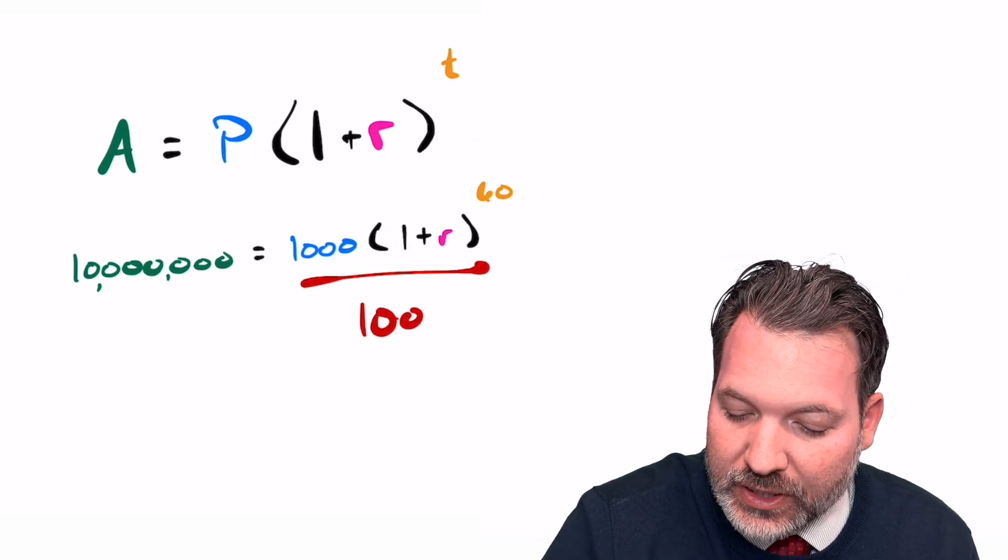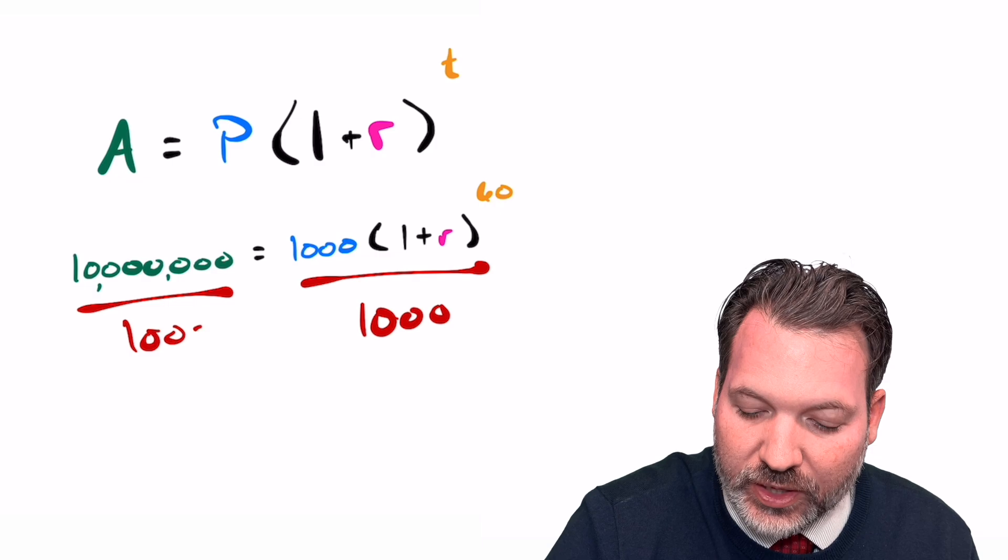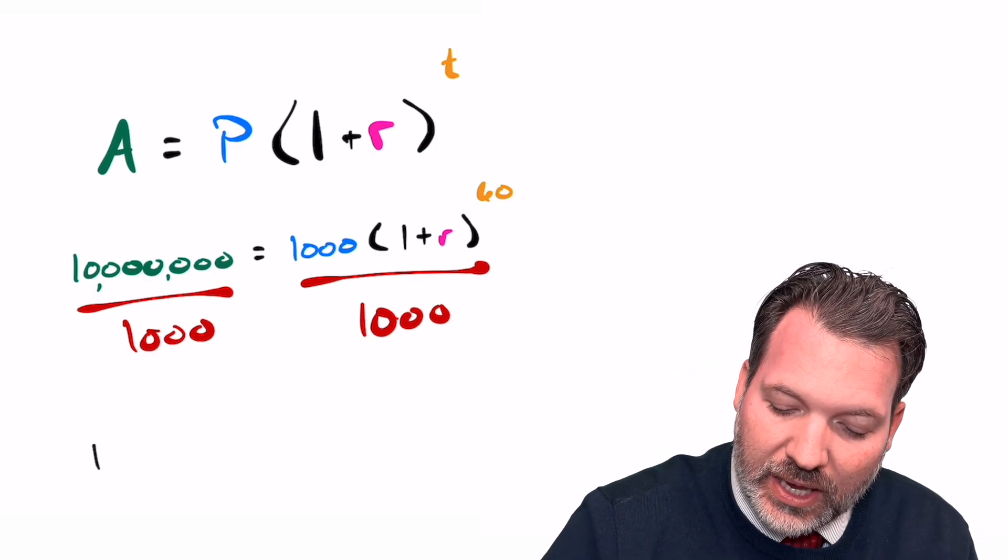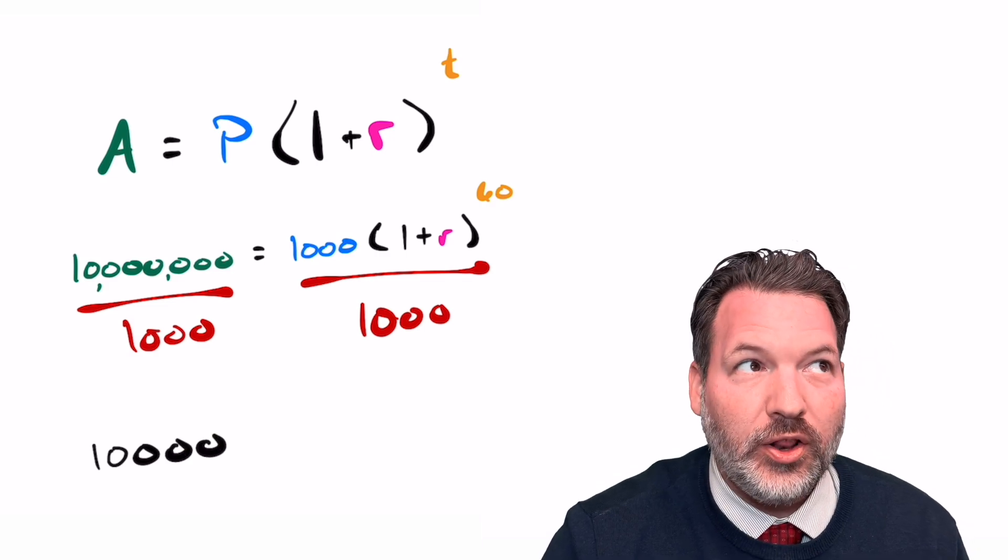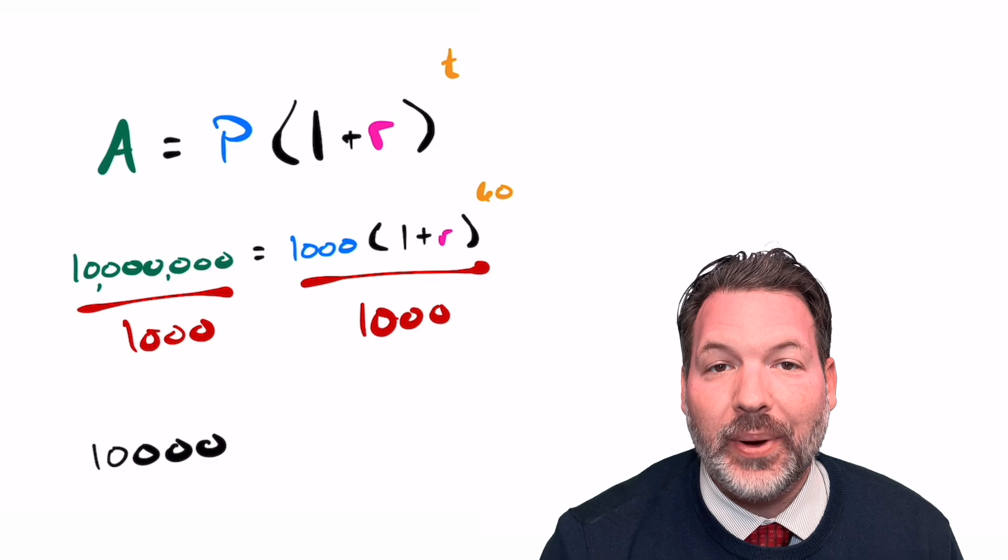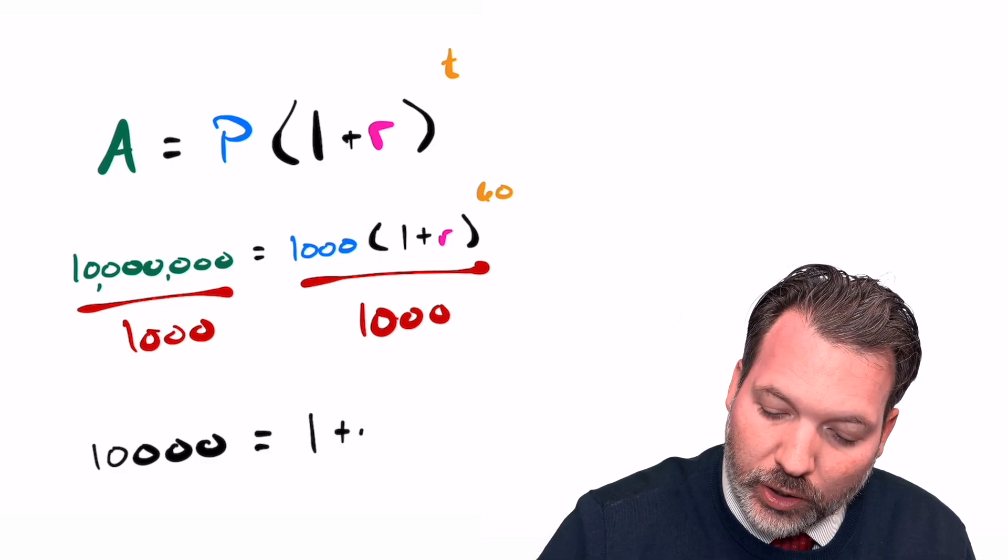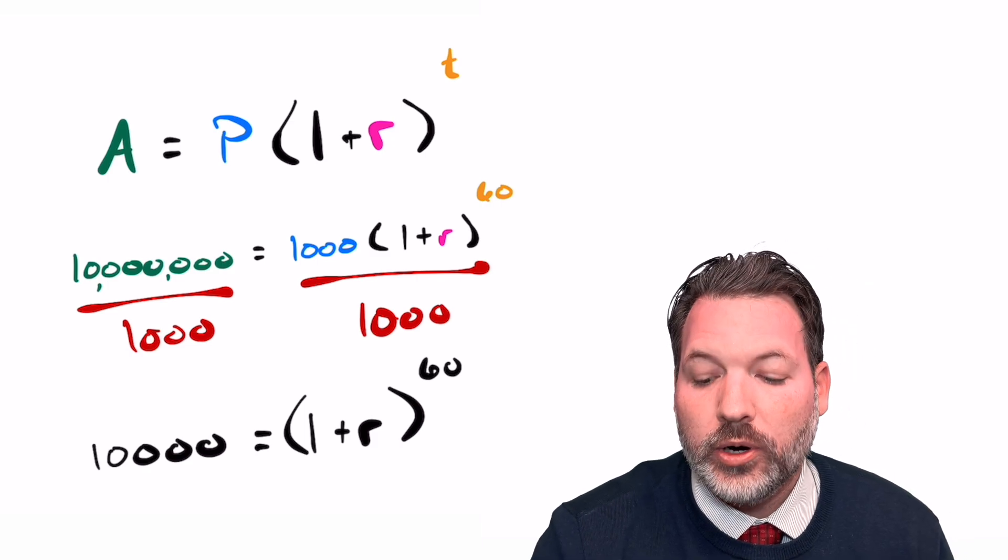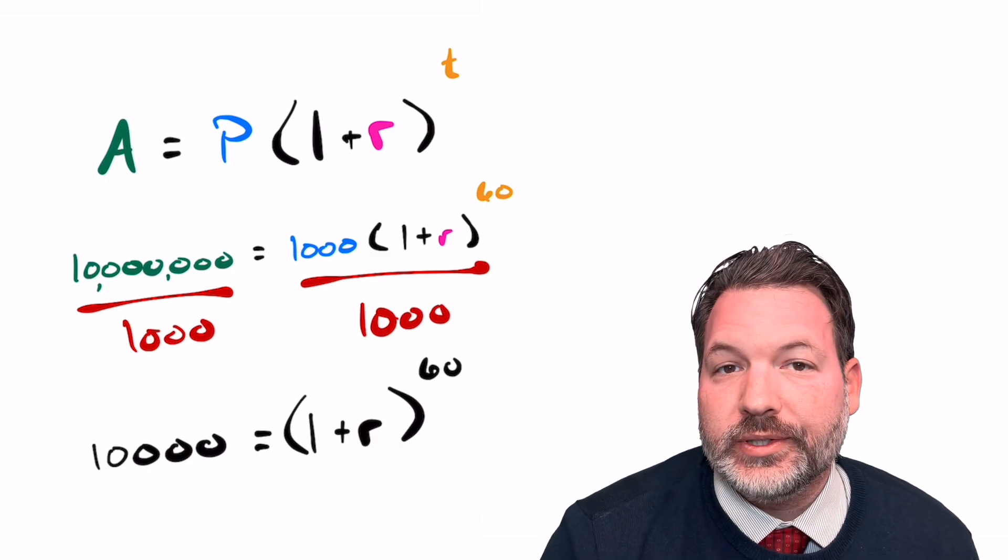Let's actually move that $1,000 over so we can just think of this in terms of basically a multiplier. To get from 1,000 to 10 million, we're actually 10,000x-ing our money. We're multiplying our initial investment by 10,000. So we really want to know 1 plus some rate raised to the 60th power, what rate would cause that to equal 10,000?